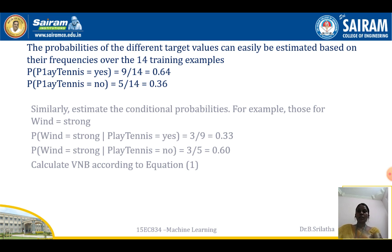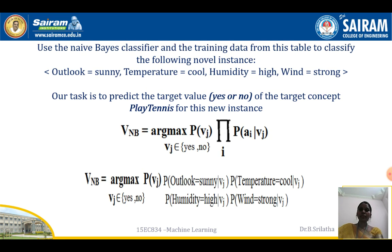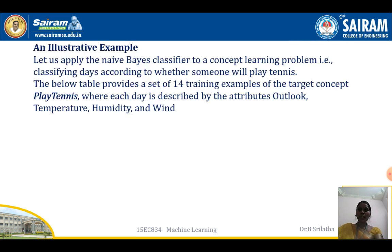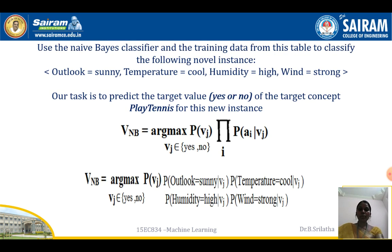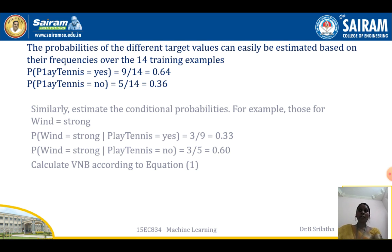For example, for Wind=Strong: looking at the table, Wind=Strong appears in 6 instances. Of those, we count how many correspond to PlayTennis=Yes and PlayTennis=No. P(Wind=Strong | PlayTennis=Yes) is 3 out of 9, giving 0.33. P(Wind=Strong | PlayTennis=No) is 3 out of 5, giving 0.60.